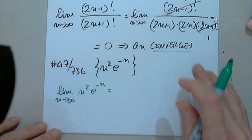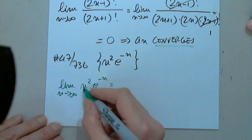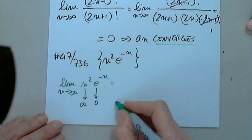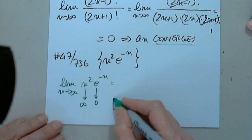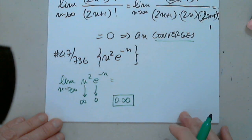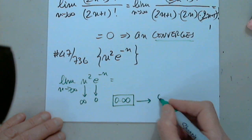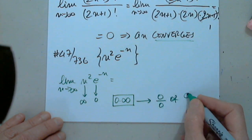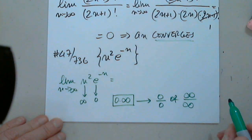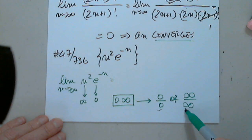This comes back to L'Hôpital's rule. This approaches infinity but this approaches zero. Zero times infinity is an indeterminate case. In order to apply L'Hôpital's rule we need to change it into either 0 over 0 or infinity over infinity. L'Hôpital's rule is not applicable in any other cases but these two.